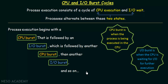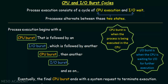To remember: CPU burst is when the process is being executed in the CPU, and IO burst is when the process is waiting for IO for further execution. Processes alternate between these two states during the course of execution. Eventually, the final CPU burst ends with a system request to terminate execution — there will be a final CPU execution in which the system requests termination of the process. We have already studied about process termination and how it takes place.